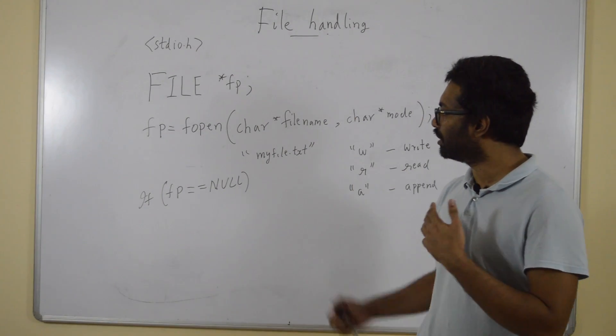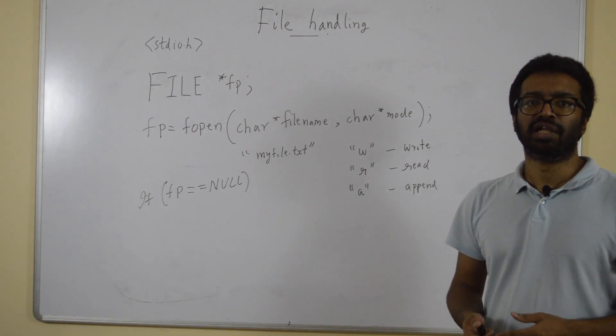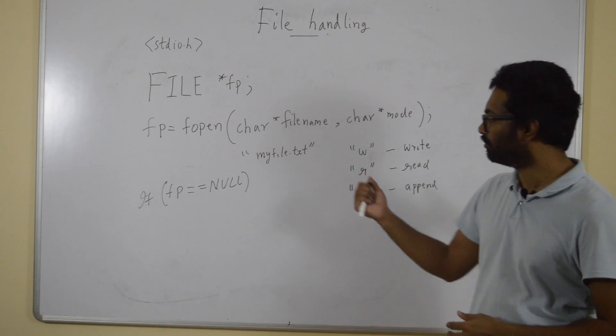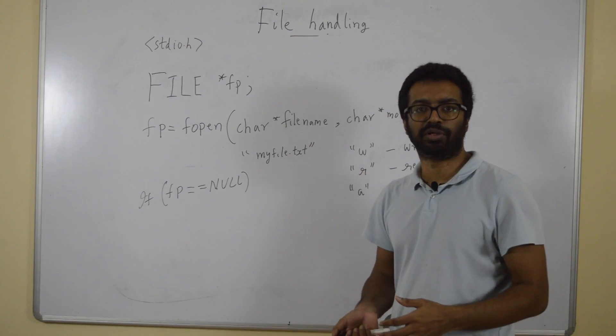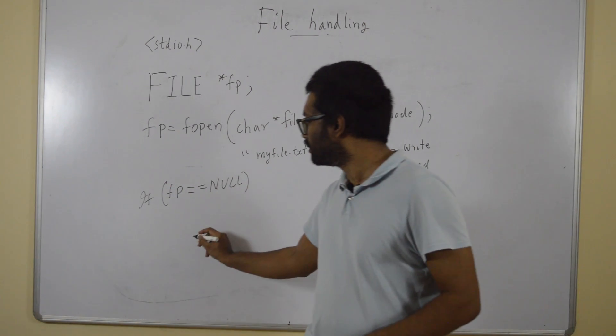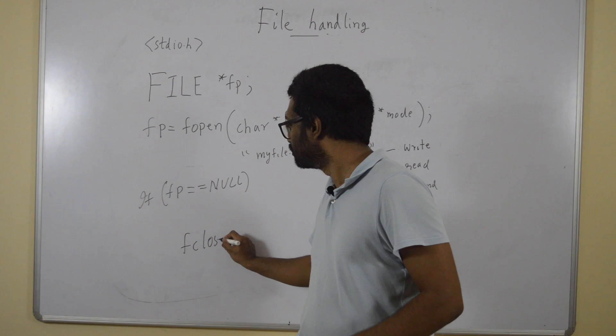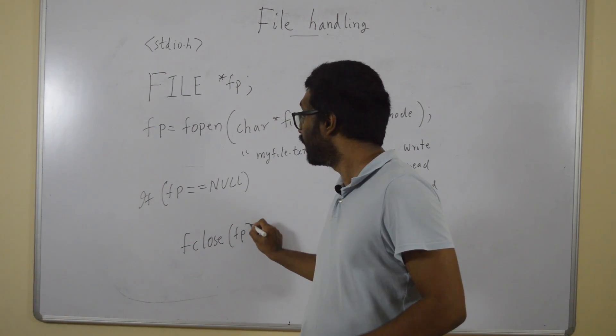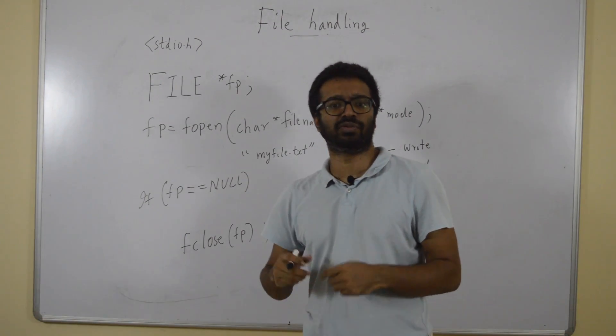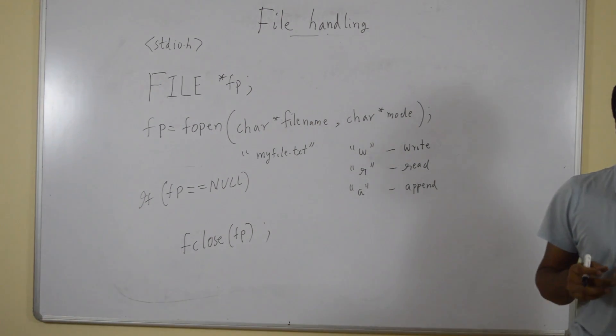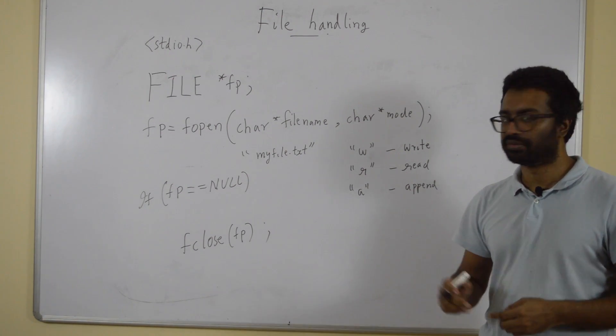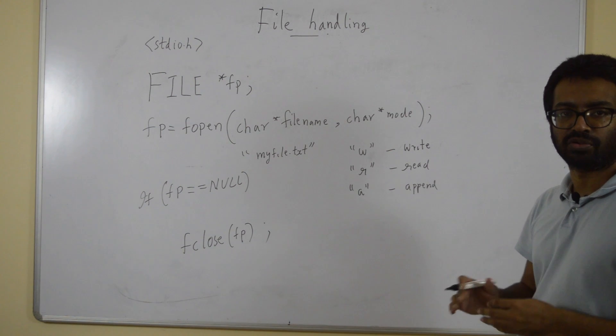Now we have seen how to open a file. Once you open a file, you can use it for reading purposes if you opened it for reading, write if you opened it for writing, etc. And once everything is done with the file, you need to close the file by saying fclose and pass the file pointer. This is important that you close the files you open, similar to you have to free the memory you have allocated. You call fclose and close it.